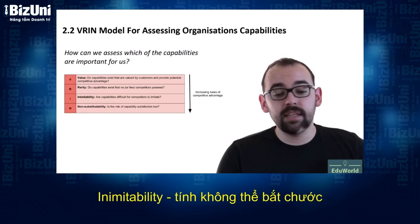The VRIN model stands for Value, Rarity, Inimitability, and Non-substitutability. This is the final step of SWOT analysis.